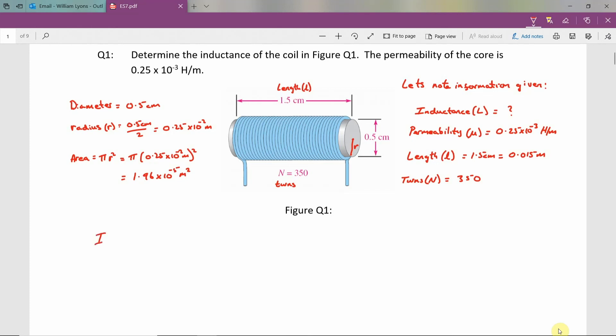We now have all the information required to calculate the inductance L. This is calculated by the number of turns squared times the permeability times the area, all divided by the length L.